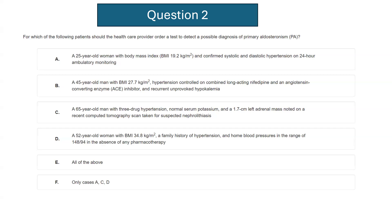Option C: a 65-year-old man with three-drug hypertension, normal serum potassium, and a 1.7 cm left adrenal mass noted on a recent CT scan taken for suspected nephrolithiasis. Option D: a 52-year-old woman with BMI of 34, family history of hypertension, and home blood pressure readings of 148/94 mmHg — definitely elevated — in the absence of any pharmacotherapy. Option E: all of the above. Option F: only cases A, C, and D. Which is the right answer?